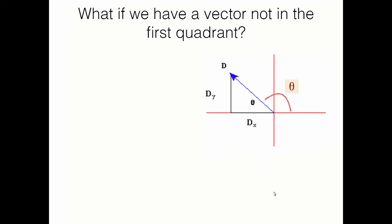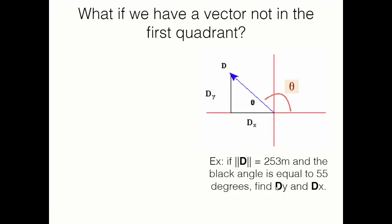What if the vector is not in the first quadrant? From the unit circle or Cartesian coordinate plane, each section is a quadrant: quadrant one, two, three, and four. This vector is in the second quadrant, so the angle with respect to the positive x-axis is larger than 90 degrees. But there's a reference angle less than 90 degrees — the angle between the vector and the nearest horizontal line, which is the negative x direction. Let's say the magnitude of vector D is 253 meters and the reference angle is 55 degrees.